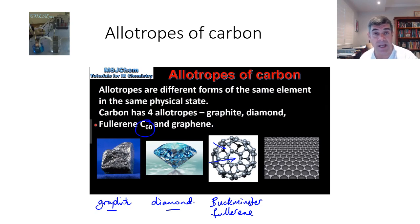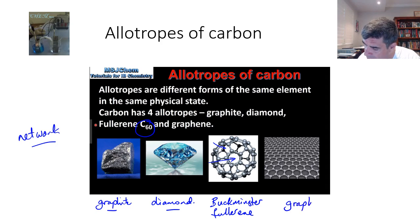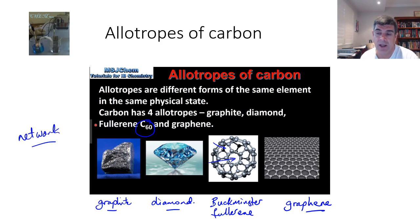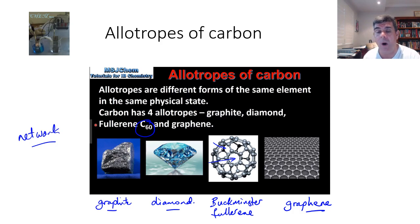With the other two allotropes, they tend to be network structures — structures which don't have a distinct molecular base. One interesting new development is a structure called Graphene. Graphene is being investigated because it is effectively a substance that can be a very thin coating on certain types of materials. You can see these little rings of carbon all joined together to form a nice surface. This is an area of quite important research at the moment, and we'll have a look at why each of these different allotropes of carbon are so different.